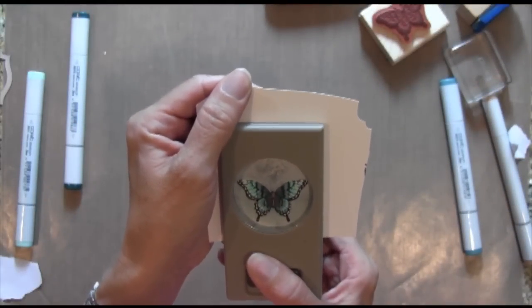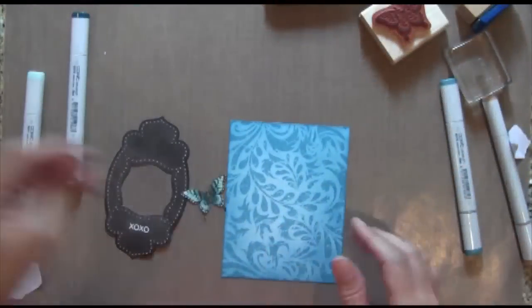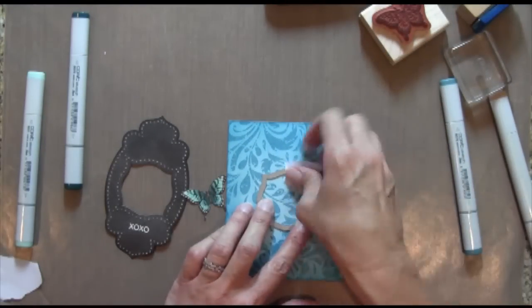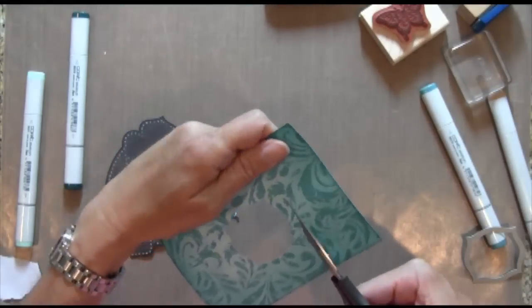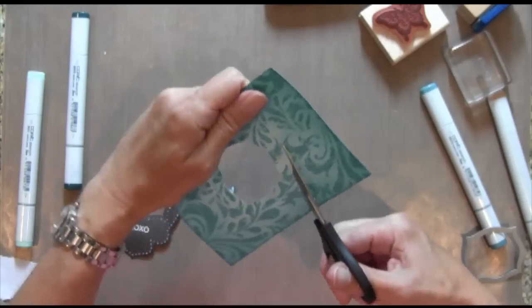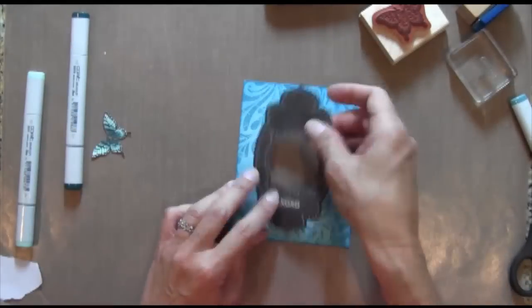So this punch that comes with this set is so awesome because it punches right against the outline of the stamp. Sometimes like the last butterfly punch that Stampin' Up had would leave kind of a white border around it. But this goes right up against the edge of the stamp. So it's perfect.